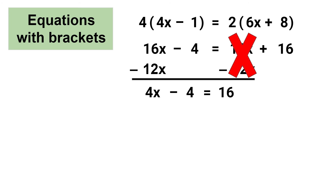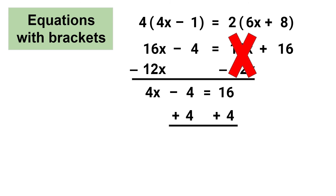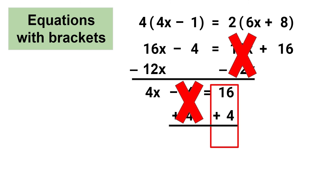We need to do reverse order of operations, which means we need to remove the constant 4. The constant 4 is being subtracted in this equation, so to remove it we need to use the opposite operation, which is addition. Whatever you do on one side of the equal sign you need to do the same on the other side. On the left side, negative 4 plus 4 equals 0, which completely removes 4 from the left side, and on the right side, 16 plus 4 equals 20.